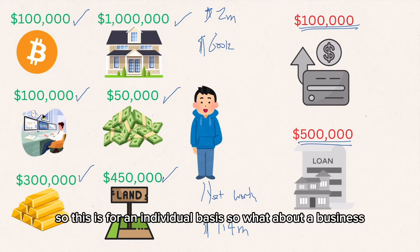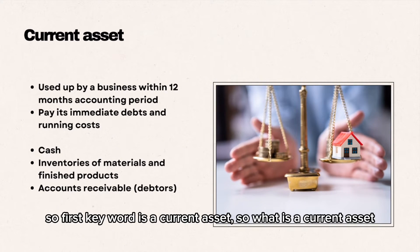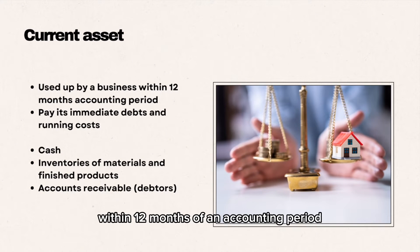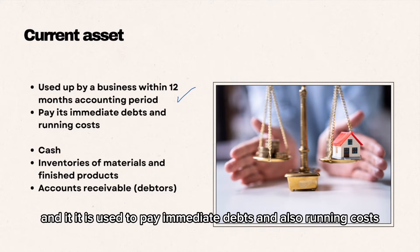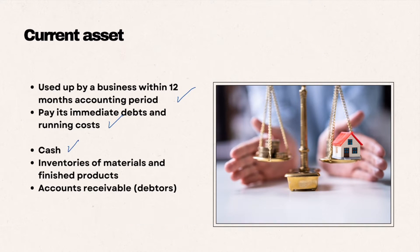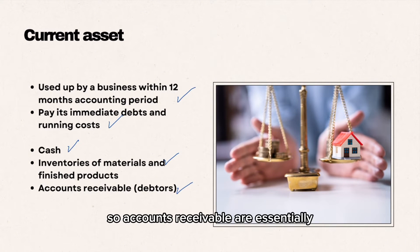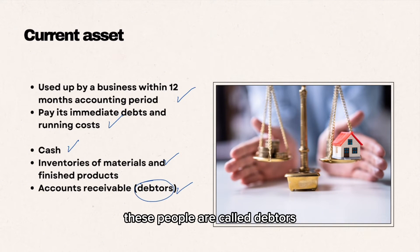So what is a current asset? A current asset is used up by a business within twelve months of an accounting period — within one year — and it is used to pay immediate debts and also running costs. Some examples of current assets are cash, inventory, and accounts receivable. Accounts receivable is essentially money paid to you by people that owe you money; these people are called debtors.